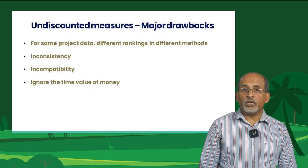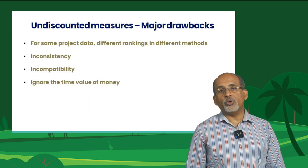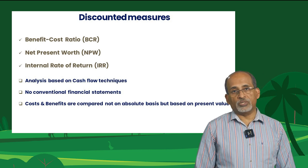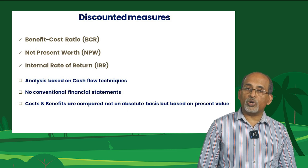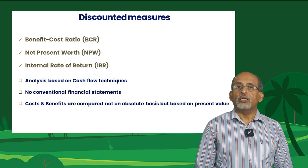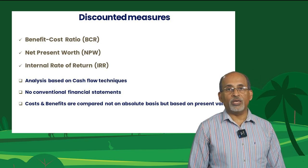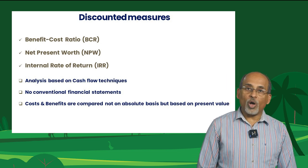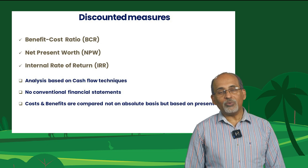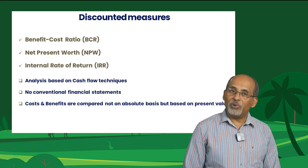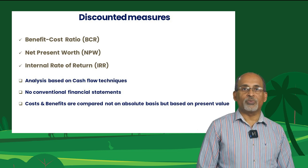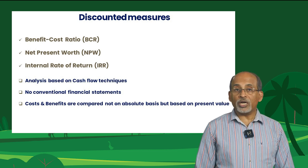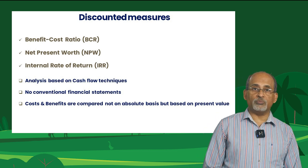Another drawback of undiscounted measures is that they do not take into account the time value of money. Now we come to the discounted measures. The discounted measures of project worth consider the time value of money while evaluating the costs and benefits of a project. In these methods, costs and benefits are compared not based on the absolute money value but based on their present worth. Discounting is essentially a technique by which one can reduce the future benefit and cost streams to their present worth.